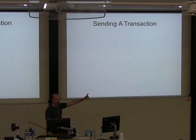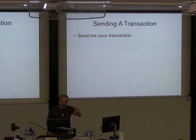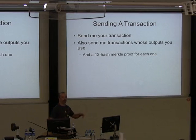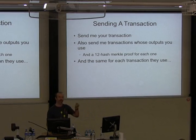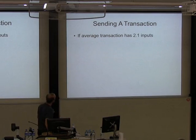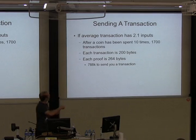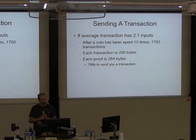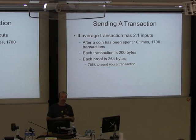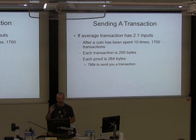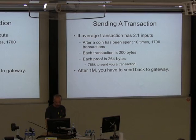To send a transaction, if you've only got these block headers, I need to actually send you the transaction. You go: it refers to these other things that you're spending — I'm going to need those too. And of course the 12-hash Merkle proof that they actually exist in the blockchain, and recursively for each of the things they use. So the blockchain is small, but sending a transaction — it turns out from the Bitcoin network they're about 2.1 inputs each. By the time you've spent a coin 10 times, you've got about 1,700 transactions dragging behind you. Each transaction is about 200 bytes; each proof is 264 bytes. That's 788K of data to send — about a 10-second transfer on a 1 megabit connection. That's about the tolerable limit. So after 1 meg, what do you do? You've got to get it off the network because you can no longer send someone a transaction that large.